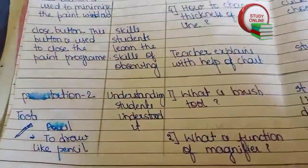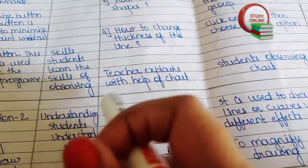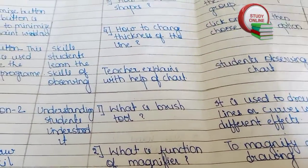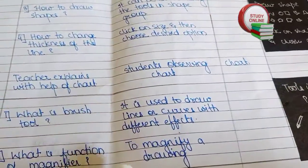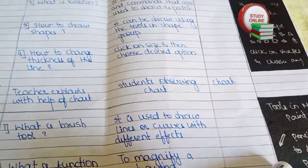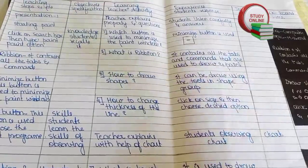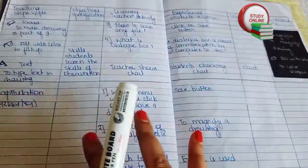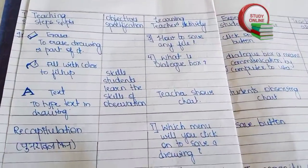For presentation two, we repeat the same process — explain for about five to six minutes, then ask questions regarding that topic. Here you can see the blackboard work for presentation two. This is how we make the presentation part — presentation one and presentation two are both made this way.